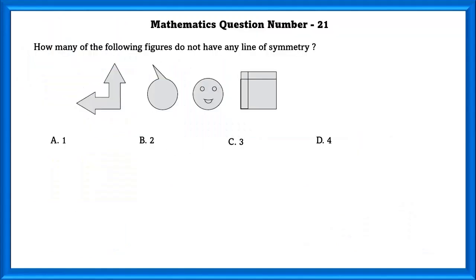Class 4, IMO Level 2. Mathematics question number 21. How many of the following figures do not have any line of symmetry? This has a line of symmetry. This has a line of symmetry. Even this has a line of symmetry. But the only figure that doesn't have the line of symmetry is the second one.